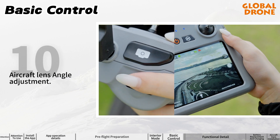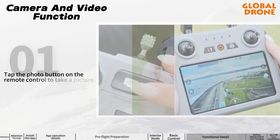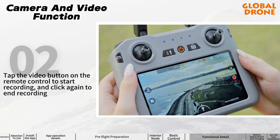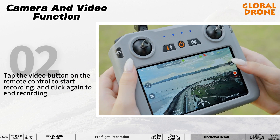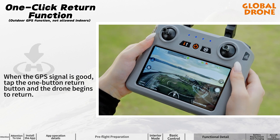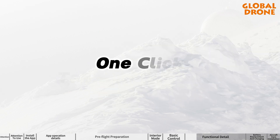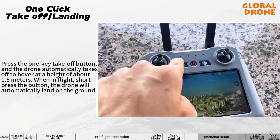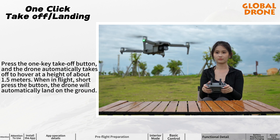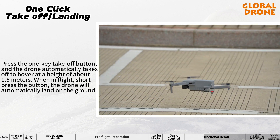Aircraft lens angle adjustment and camera functions: tap the photo button on the remote control to take a picture. Tap the video button to start recording and click again to end recording. One-click return: when the GPS signal is good, tap the one-button return button and the drone begins to return. One-click takeoff/landing: press the one-key takeoff button and the drone automatically takes off to hover at about 1.5 meters. Short press the button again and the drone will automatically land.